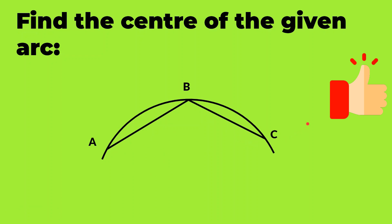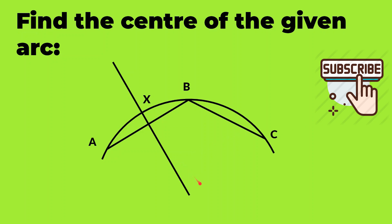Step 2 is to draw the perpendicular bisectors of each chord. So the perpendicular bisector of AB will be this line which cuts the circle at X, and the perpendicular bisector of BC will be this line which cuts the circle at Y.